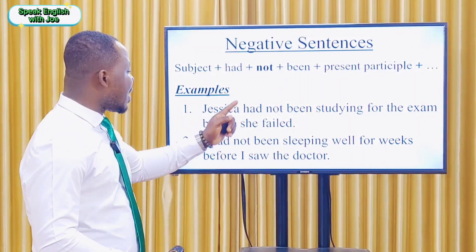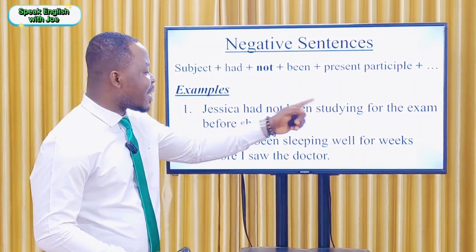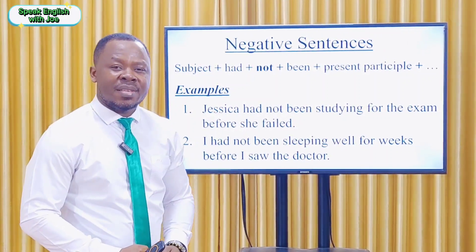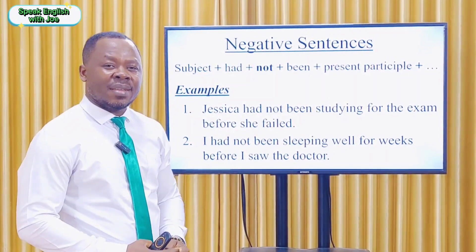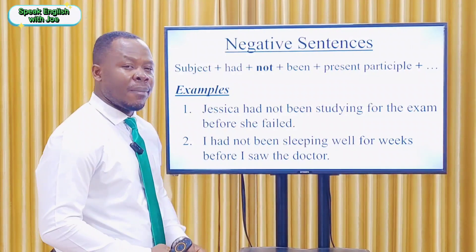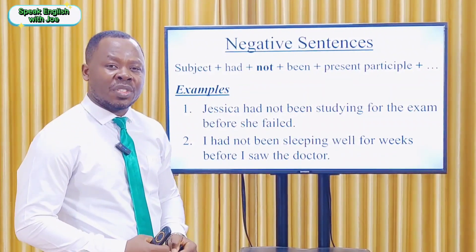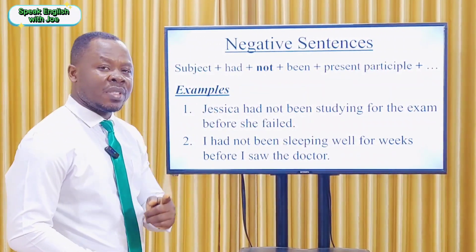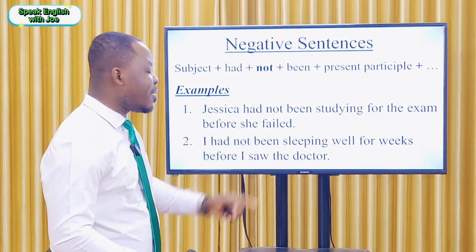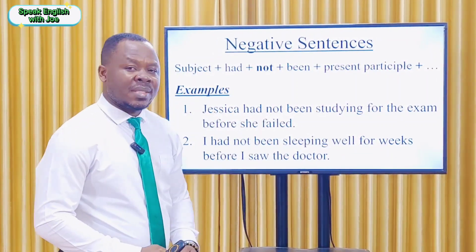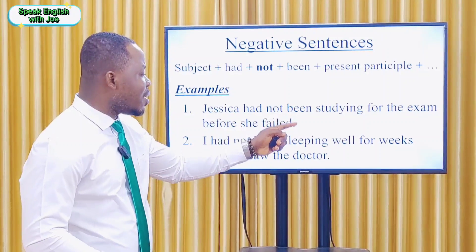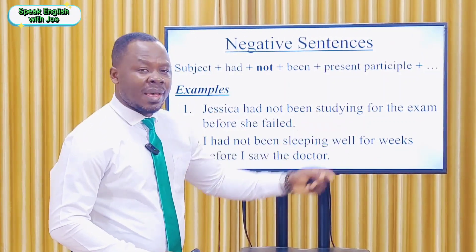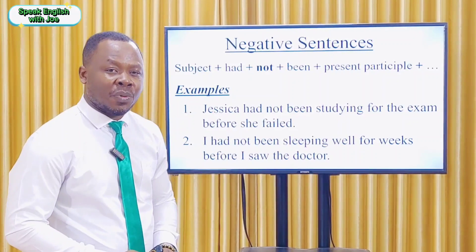Example one: 'Jessica had not been studying for the exam before she failed.' In this sentence, the subject is 'Jessica' (subjective pronoun: she), plus the first helping verb 'had', plus 'not', plus the second helping verb 'been', plus the main verb 'study' plus -ing (the present participle), and plus the rest of the sentence.